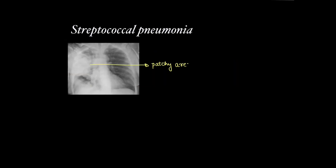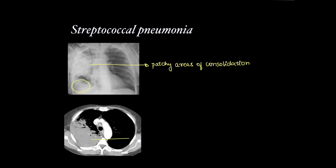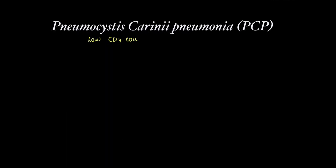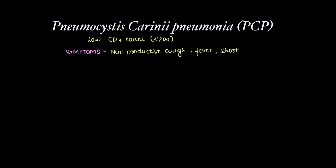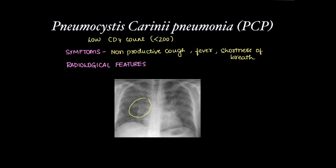We'll be discussing the imaging findings on chest X-ray. Streptococcal pneumonia can show a patchy area of consolidation, also seen on CT as consolidation with air bronchogram. Pneumocystis carinii pneumonia occurs with low CD4 count less than 200. Symptoms are non-productive cough, fever, and shortness of breath. On imaging, X-ray shows perihilar haze which can progress to frank consolidation.